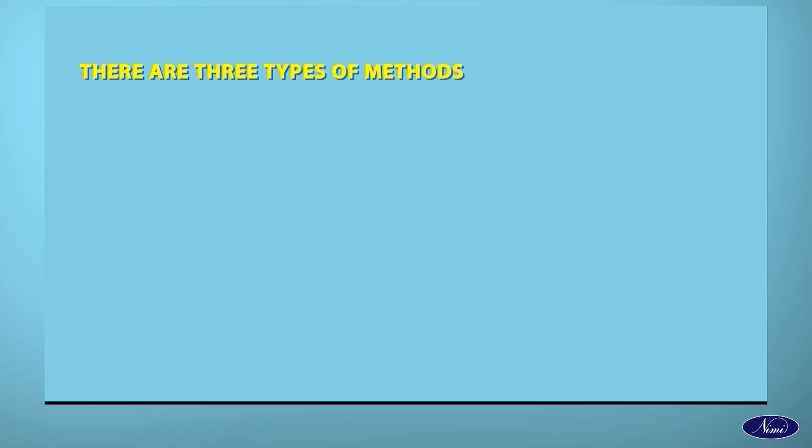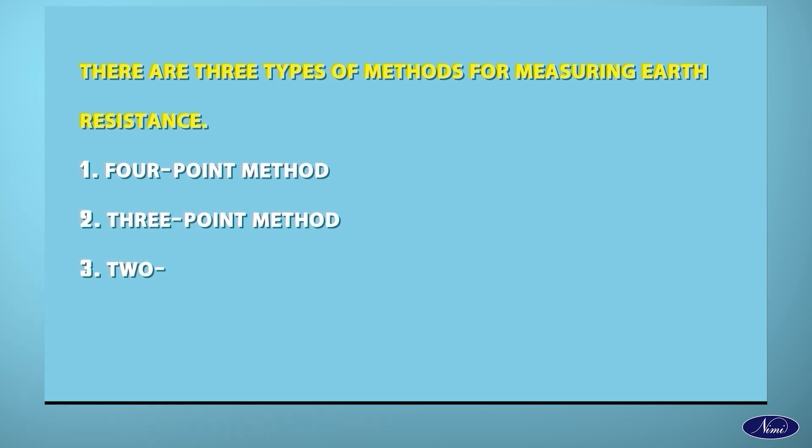There are three types of methods for measuring Earth's resistance: one, 4-point method; two, 3-point method; three, 2-point method.